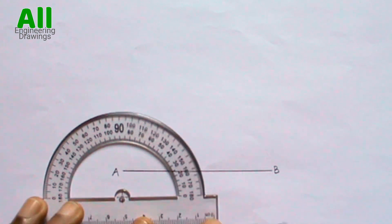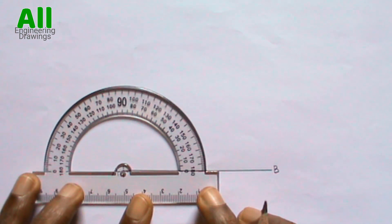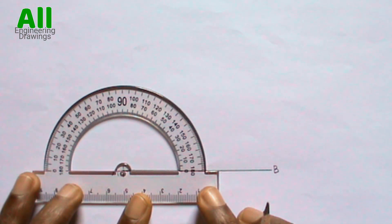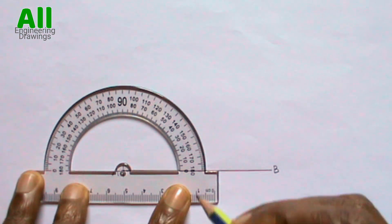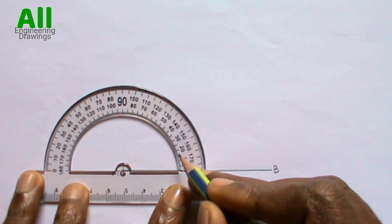Now to complete your triangle, you have to place your protractor on point A. Then you have to mark the required angle, that is the angle given.